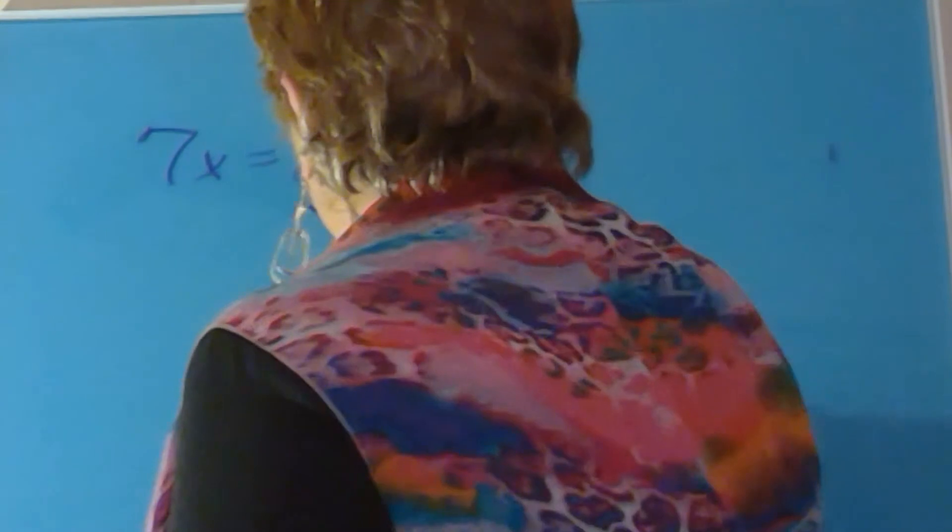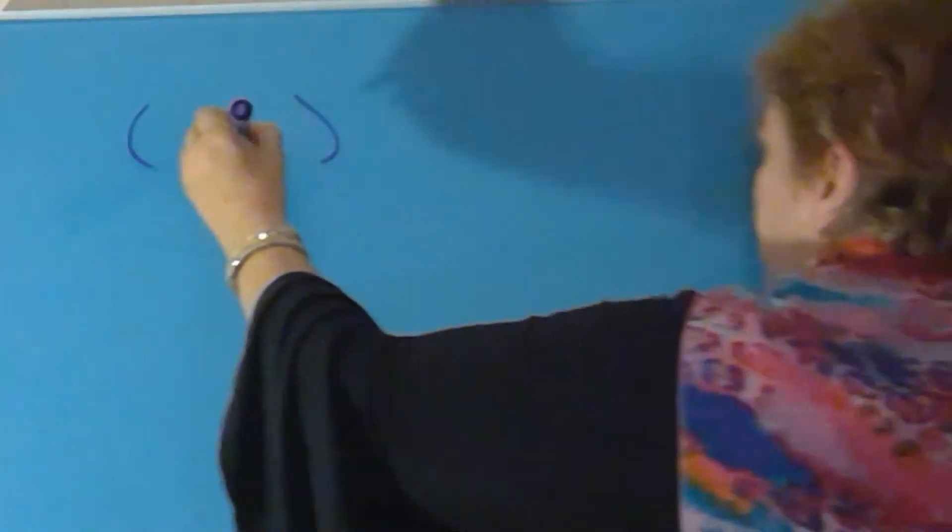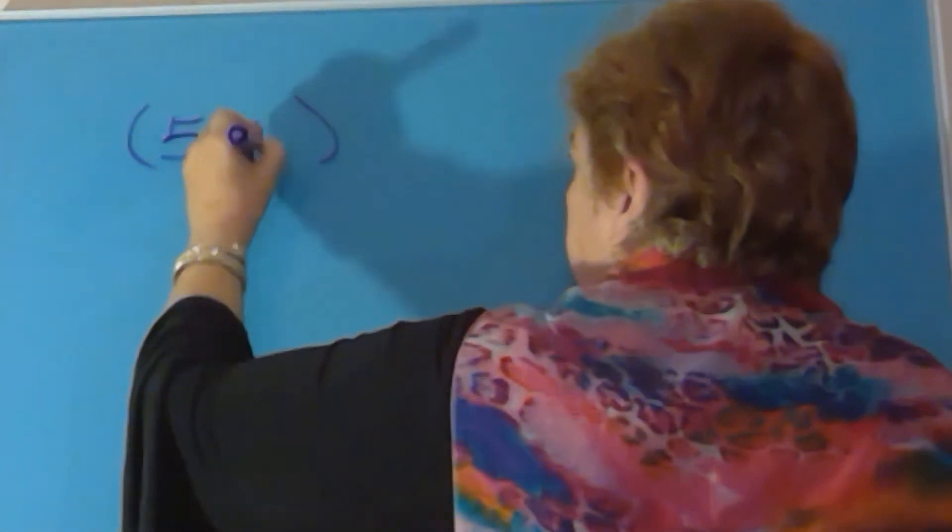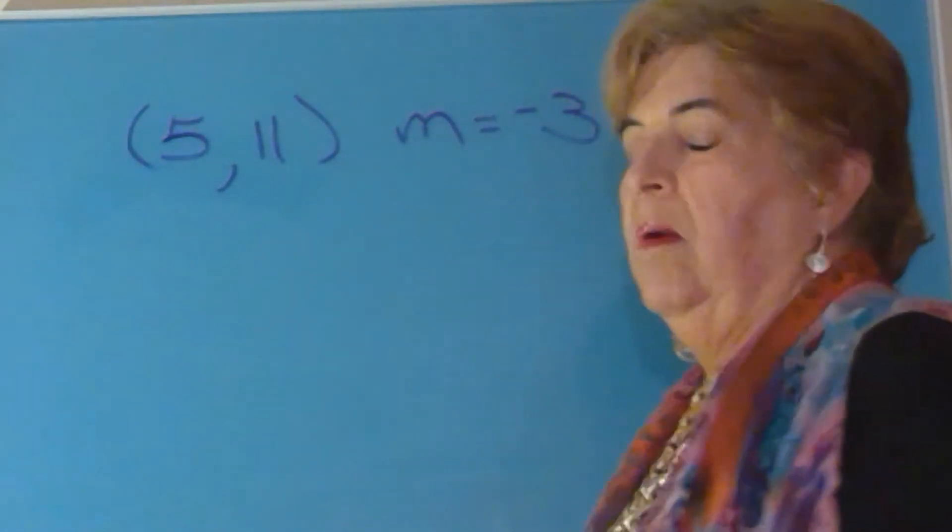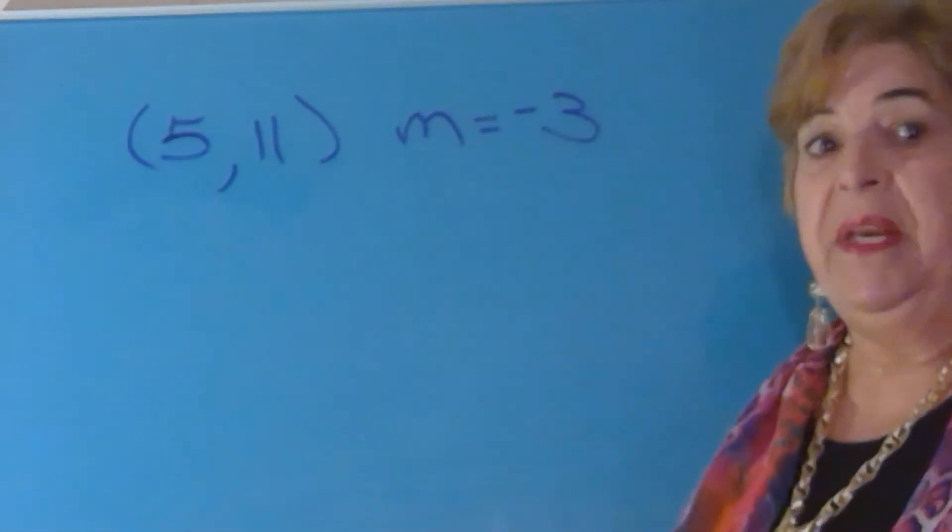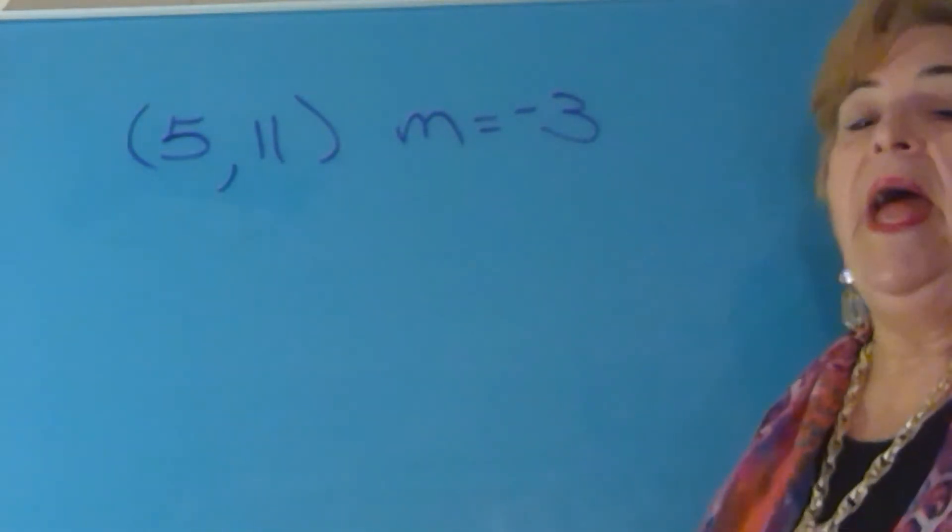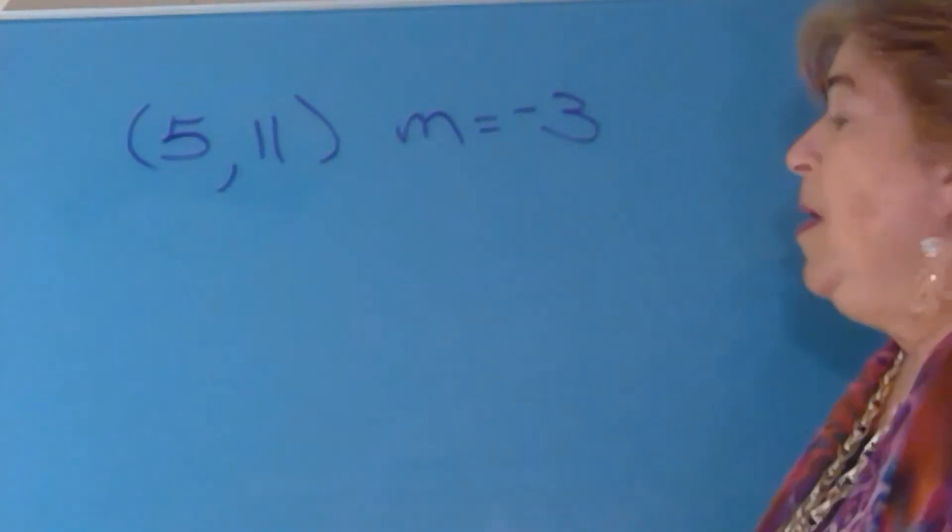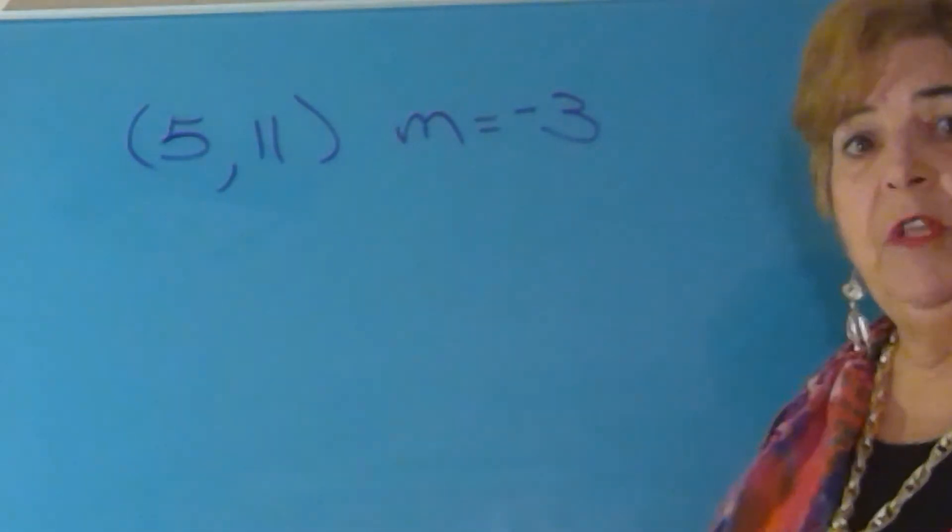The next problem asked you to write the equation of a line that passed through the point five, eleven and had a slope equal to negative three. Now, I'm going to show you what I think is the easiest way to do this. Many of you did it another way. You started by finding what the y-intercept is. And that is an acceptable way to do this. But I really think using the point slope form is much easier.